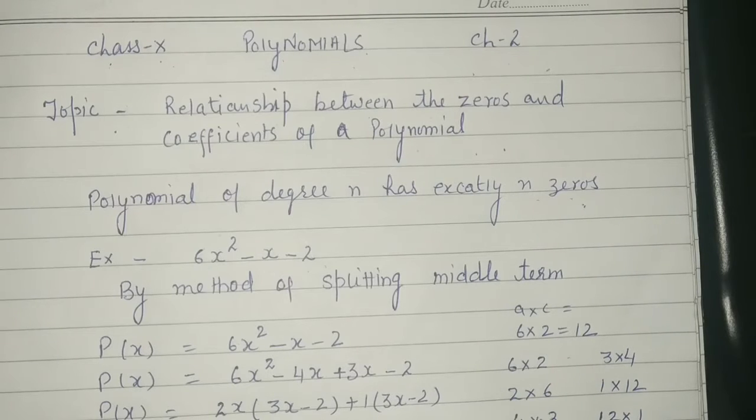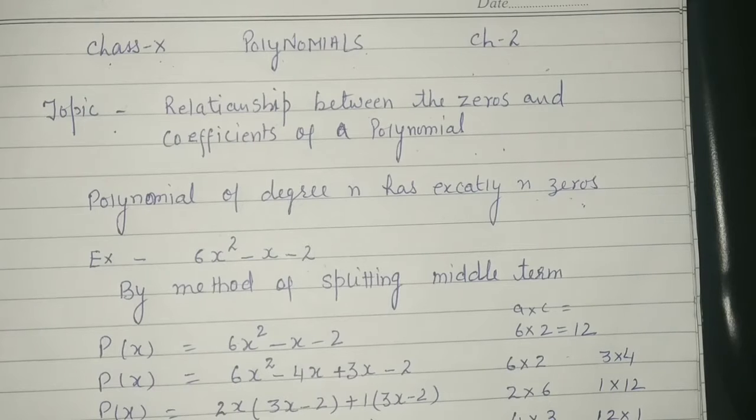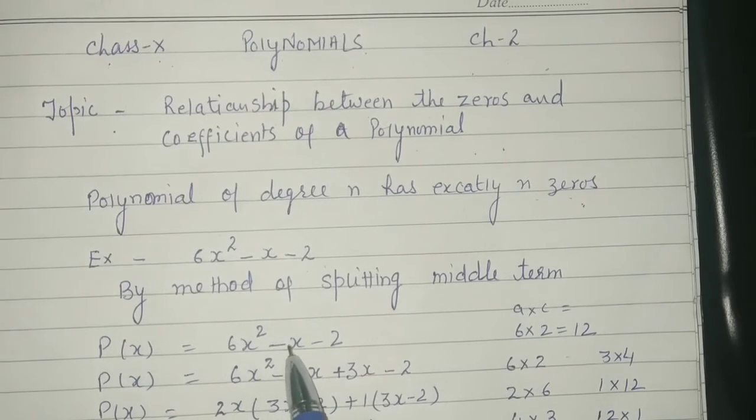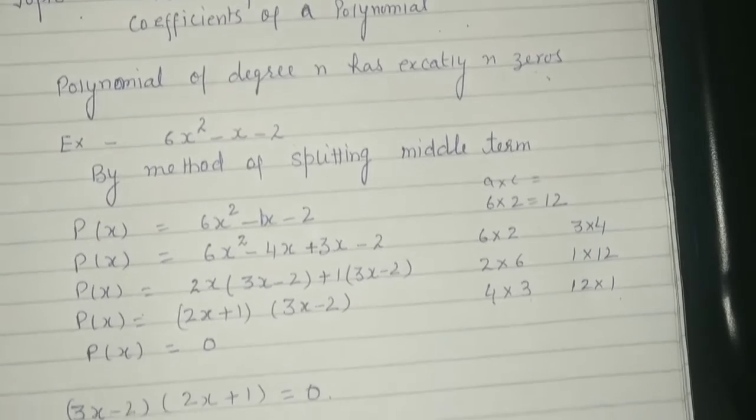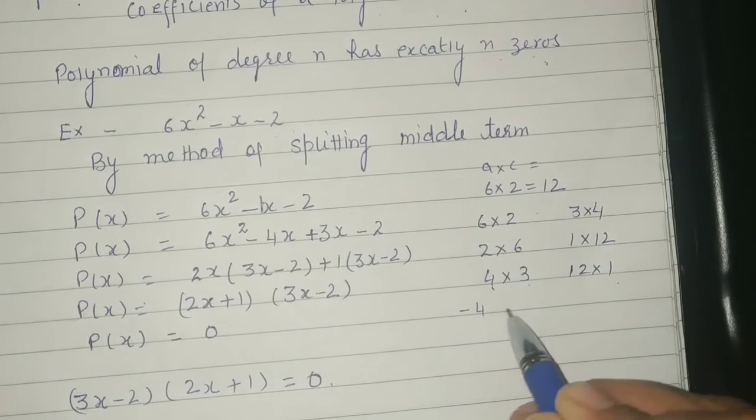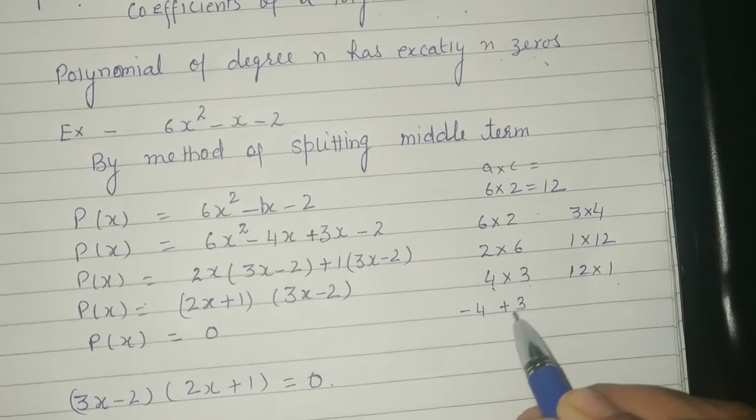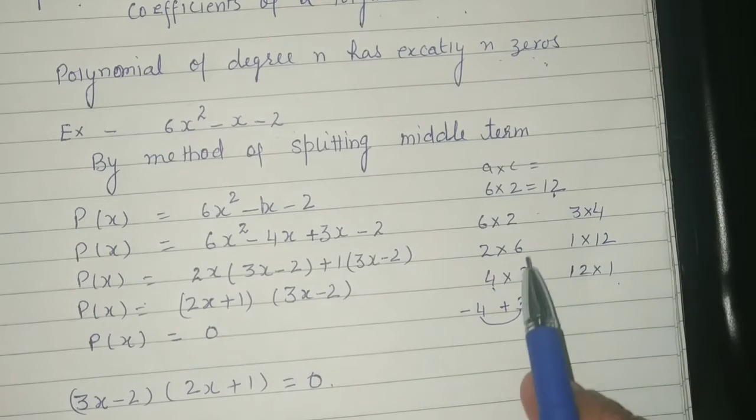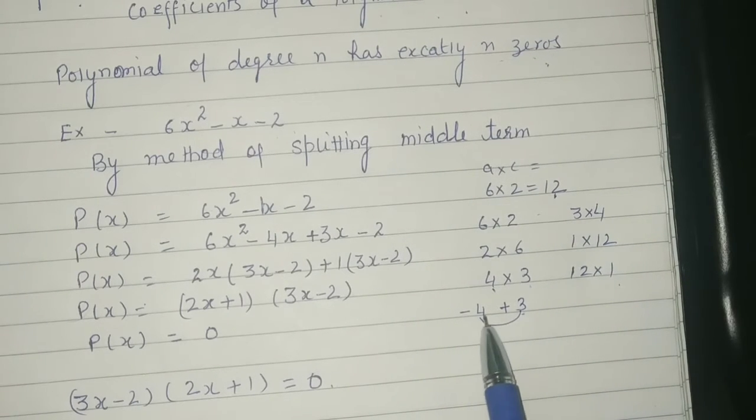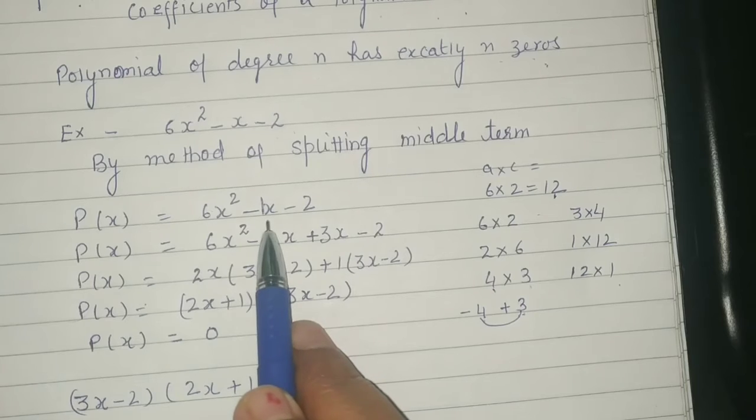In these we need to find which two factors, when we add or subtract them, we get only 1. So here we see that factors are minus 4 and plus 3. We multiply it, we get minus 12. And when we add or subtract it, we get minus 1.